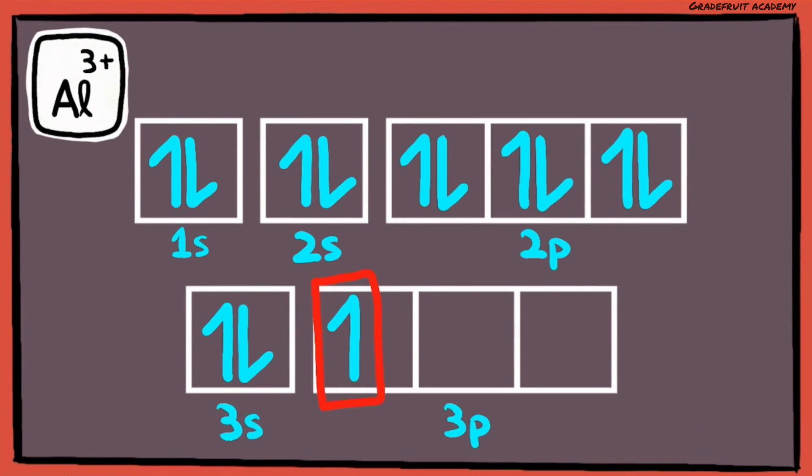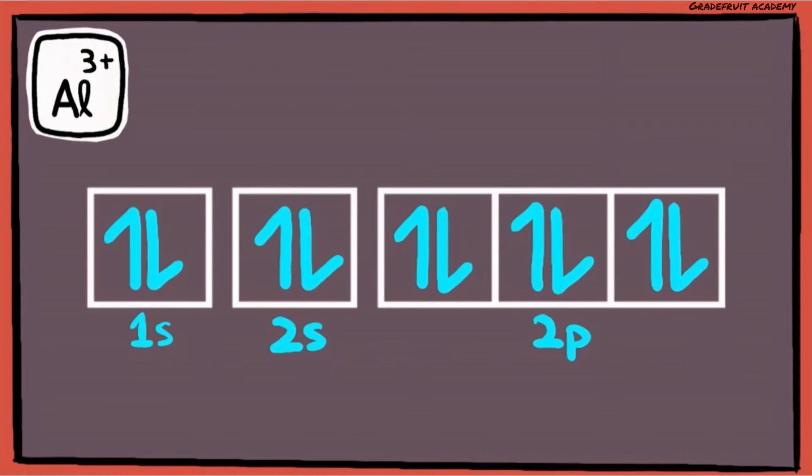So, we will remove the first electron from the 3p orbital first, and the remaining 2 from the 3s subshell like this. So, this is how the electron-in-box diagram will look like for the aluminium cation.